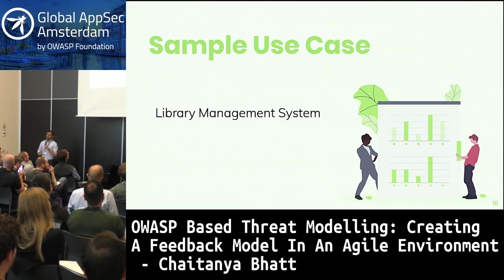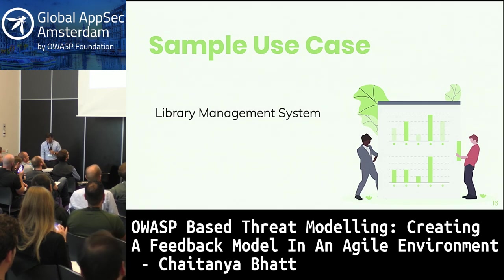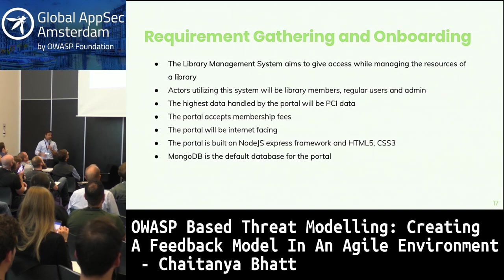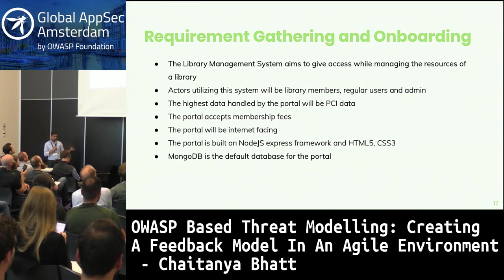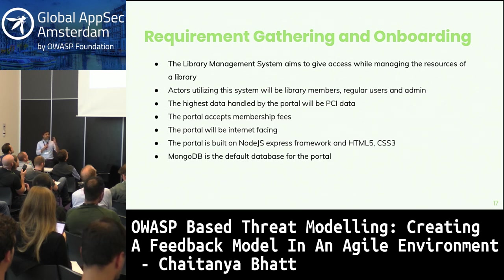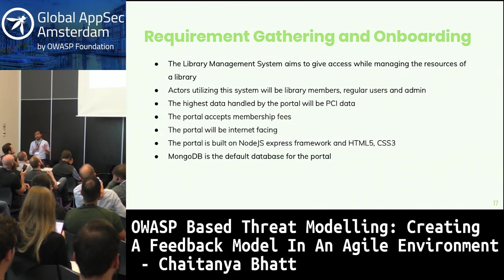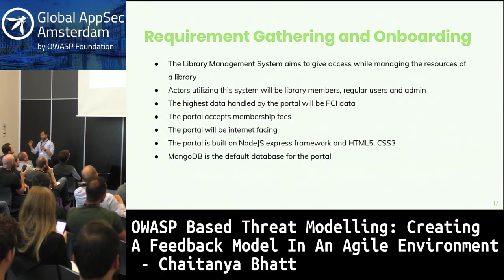For the sake of simplicity, I took a library management system as an example and will follow those five steps. Starting with step one — requirement gathering and onboarding — we gather the requirements: the library management system aims to manage resources and give access to users. There are three types of actors: regular users, members, and admins. The data handled includes PCI data because it accepts credit cards for membership fees. The portal is internet-facing, built on Node.js Express framework, HTML5, CSS3, and MongoDB as the database.